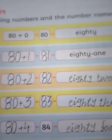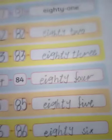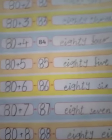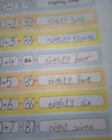Learn the numbers then the number names: 81, 82, 83, 84, 85, 86, 88, 89. Learn with spelling. 82, 83 — understand? Okay, thank you. Allah hafiz.